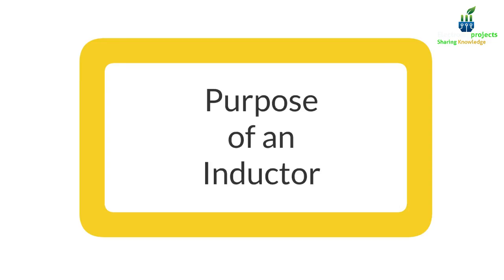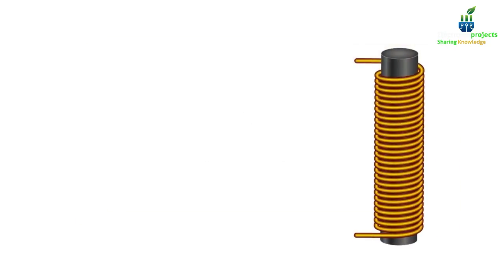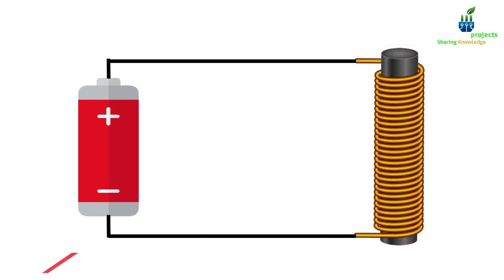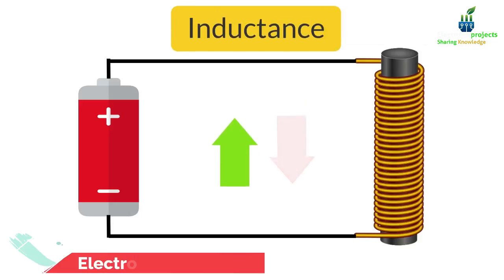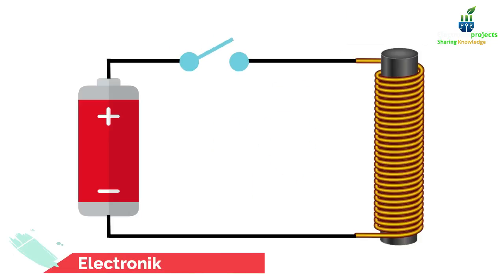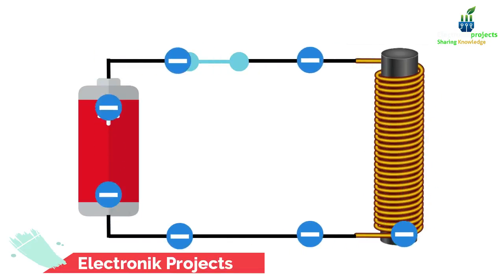The purpose of an inductor is to oppose any change in the magnitude of current within a circuit. The electrical property that resists either an increase or decrease in current is known as inductance. An inductor is created when an electrical current flows in a wire wrapped around a magnetic core.